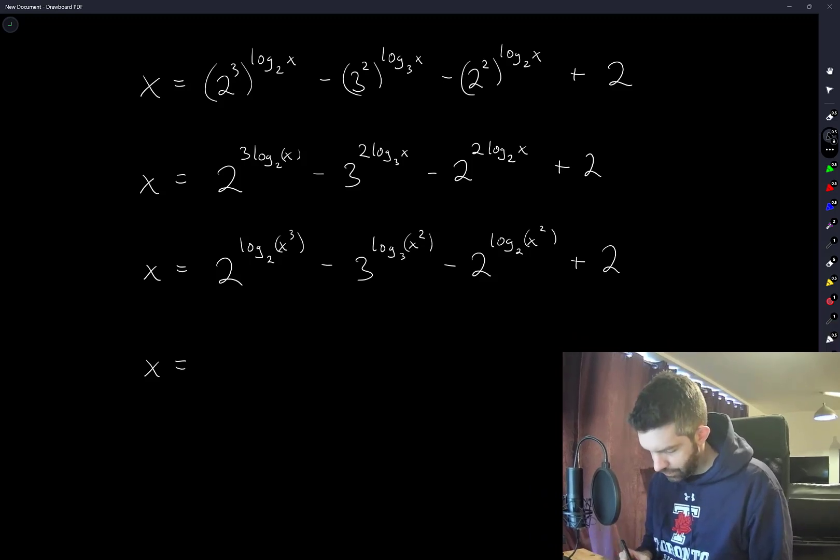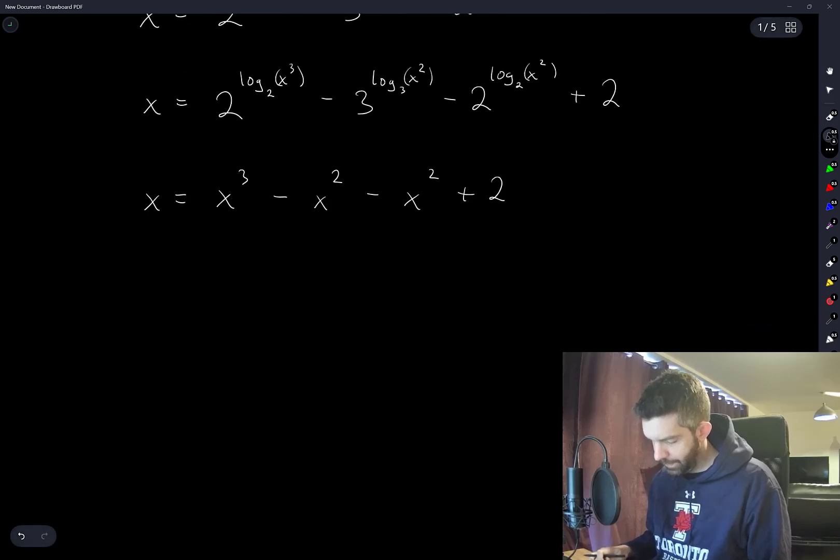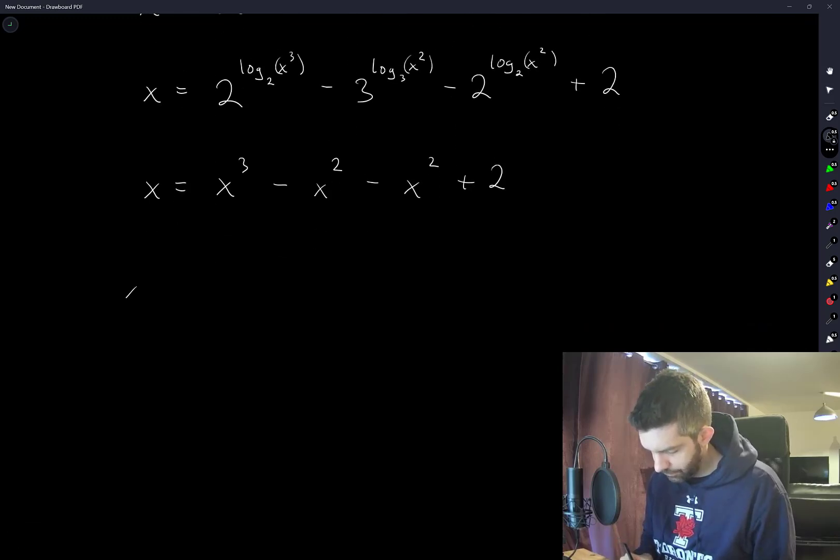So this is just x³. This is just x². This is also x² plus 2. So my equation becomes x³ minus 2x² minus x plus 2 equals 0.